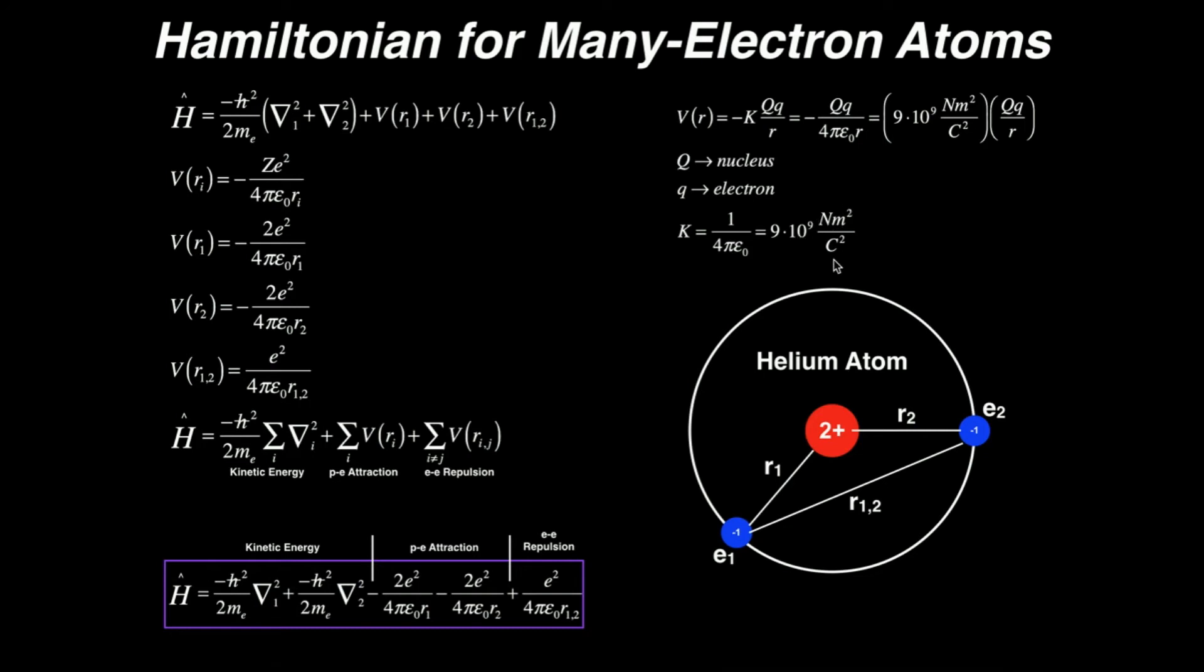Typically, though, we're not actually getting a number here. We're just setting it up. So we usually just leave it as over four pi epsilon zero, and then r is the particular r that we're dealing with.